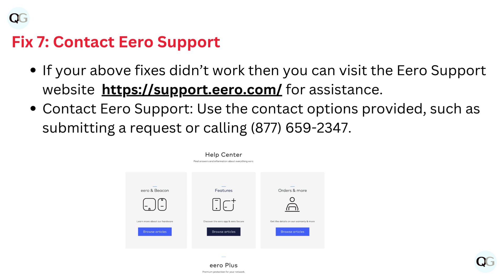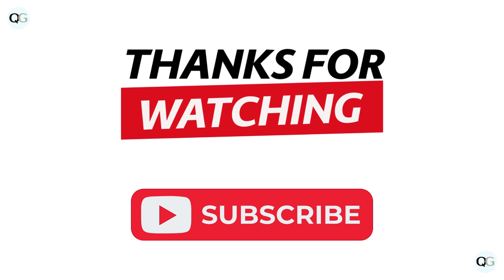Fix 7: Contact Eero support. If the above fixes didn't work, then you can visit the Eero support website at support.eero.com for assistance. Use the contact options provided, such as submitting a request or calling 877-659-2347. Thanks for watching.